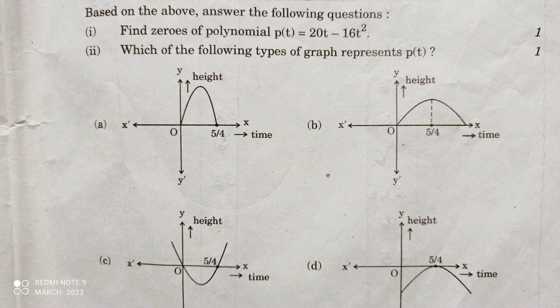Based on the above, answer the following questions. First question is, find zeros of the polynomial p(t) = 20t - 16t².